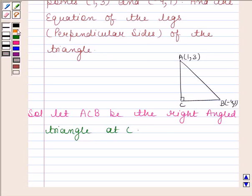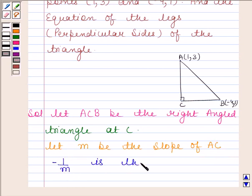Now let m be the slope of AC. As m is the slope of AC, therefore -1/m is the slope of BC.